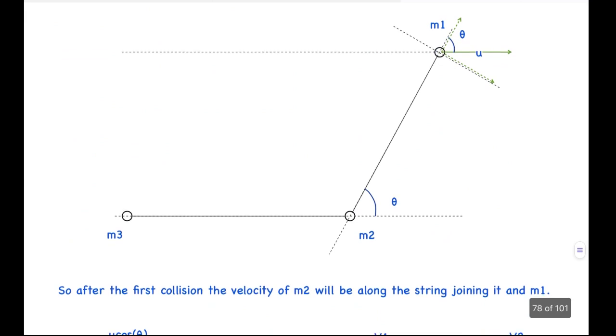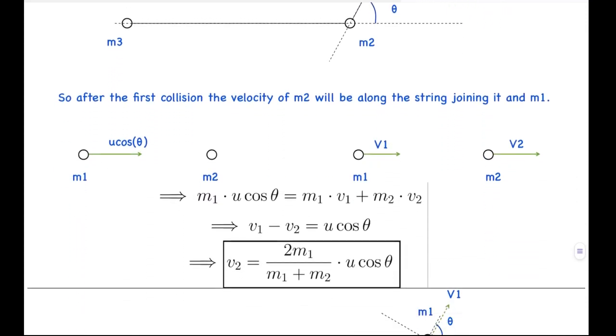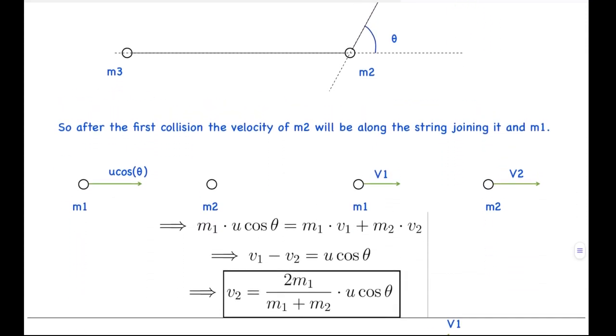From here, the velocity u is in this direction of ball A, and in the direction along the string it will be u cos theta, and in direction perpendicular to the string it will be u sin theta. After the first collision, we can model it like this: m1 is coming with a velocity of u cos theta which is along the thread or the string.